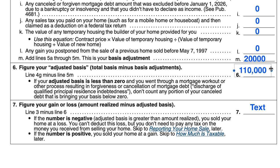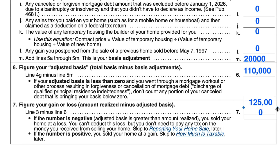We then subtract the adjusted basis from the total amount realized — which was $215,000 — to get our gain or loss. If the result is negative, you sold your home at a loss; you can't deduct the loss, but you don't owe taxes on the money received. If the number is positive, you sold at a gain and need to determine whether you're eligible to exclude that gain under Section 121 or through some other mechanism.